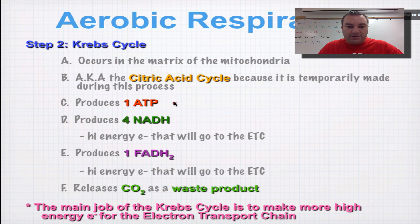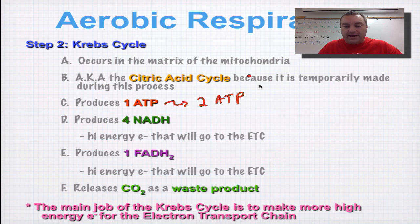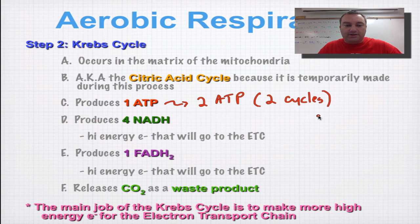The first product is ATP — you're going to get two ATP. When we split glucose during glycolysis we got two pyruvic acid, and because there are always two Krebs cycles going at once, you have two of these churning next to each other producing all these products. So you're going to get four NADH.